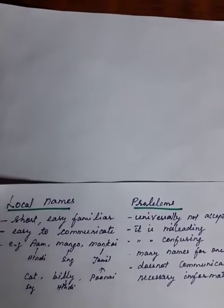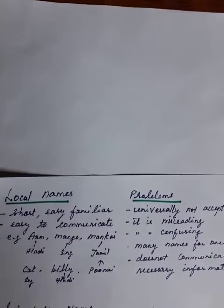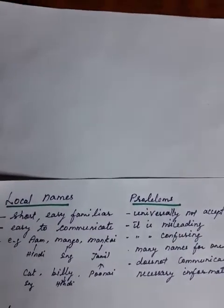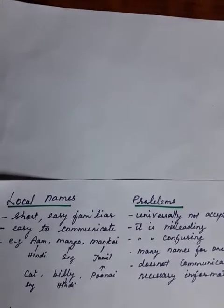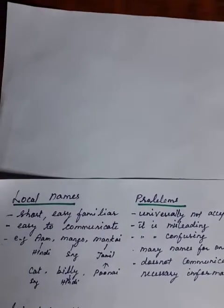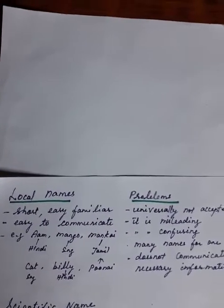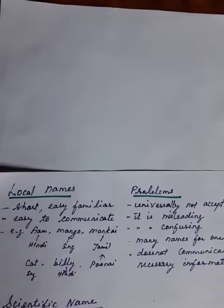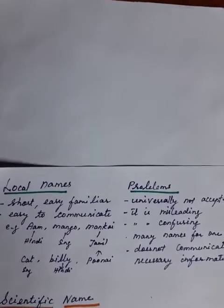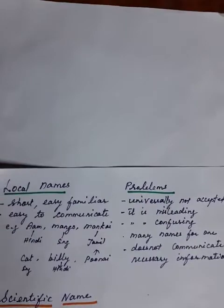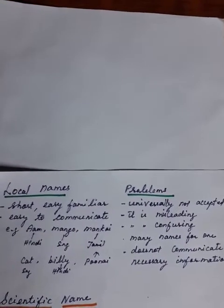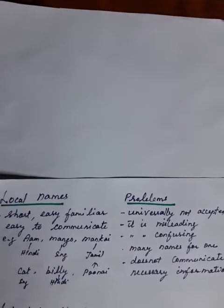Local names are what people in a local area call an organism — short, easy to remember, like a nickname, familiar to local people for easy communication. For example, mango in English, aam in Hindi, manga in Tamil. Similarly, cat in English, billi in Hindi, poonai in Tamil. These are local names given to the same organism.